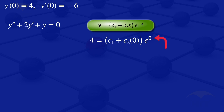Since e^0 equals 1 and c2 times 0 equals 0, we are left with 4 equals c1. So c1 equals 4.